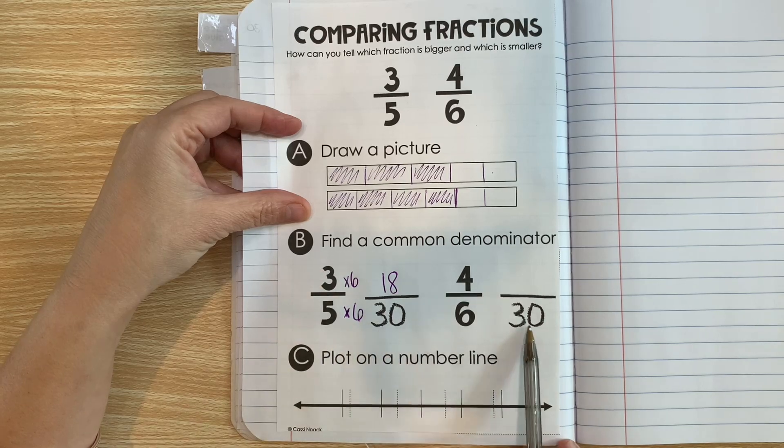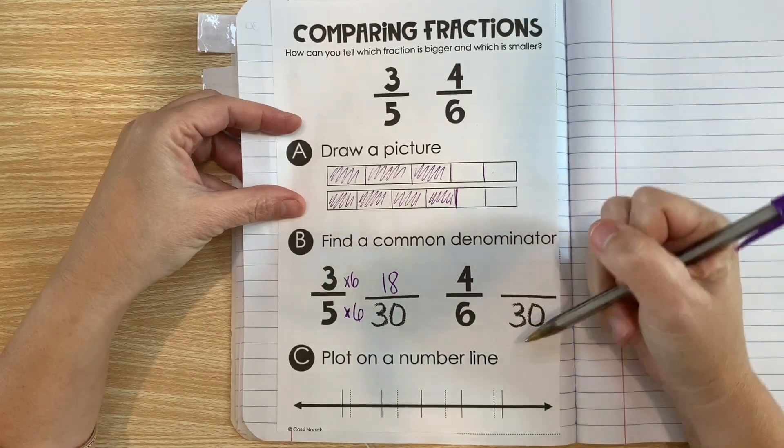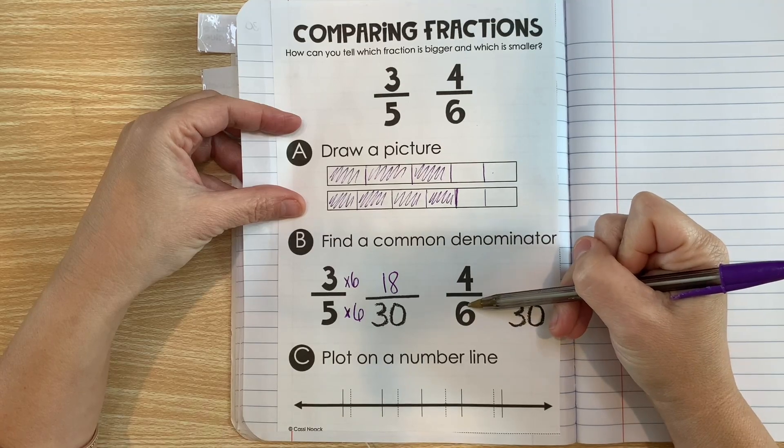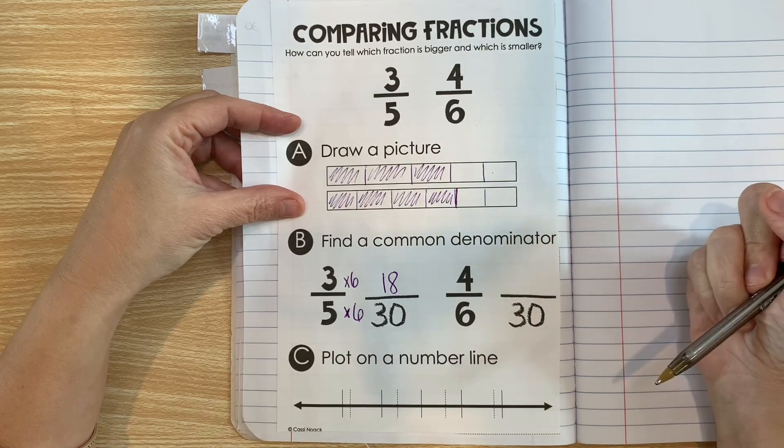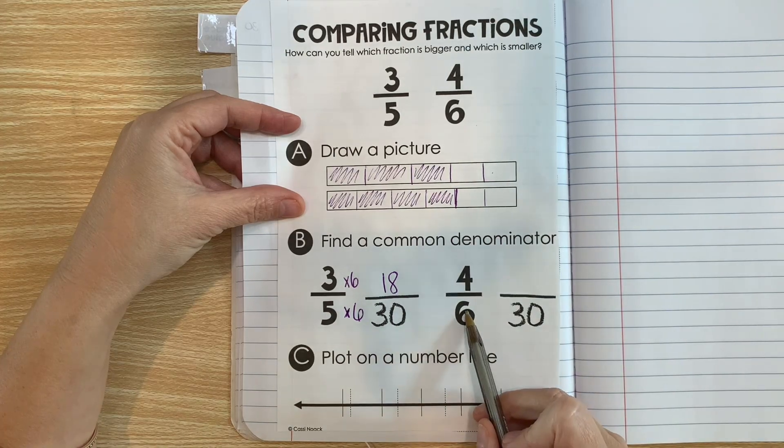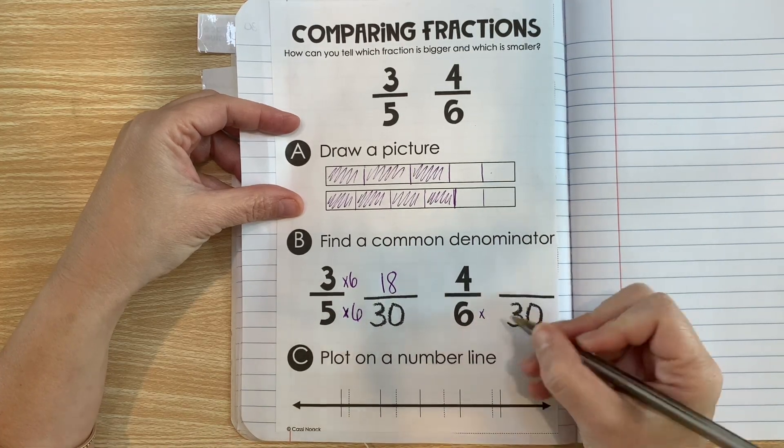So we've created an equivalent fraction. It's a harder fraction, but it still is equivalent and it's going to help us compare with this one. So now let's do the same thing. We're going to start with 6 and we're going to create an equivalent fraction that has a denominator of 30. So 6 times what is 30?